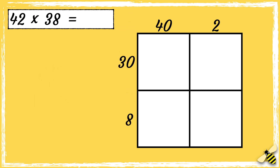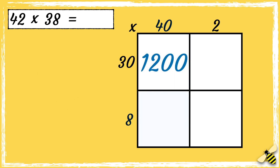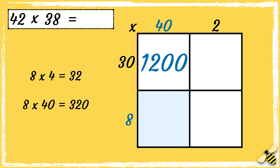Now that we're set up, we're ready to multiply. Let's start by multiplying 30 with 40. I know that 3 times 4 is 12, so 30 times 40 is 1200. Now we can multiply 8 by 40 — I know that 8 times 4 is 32, so 8 times 40 is 320.